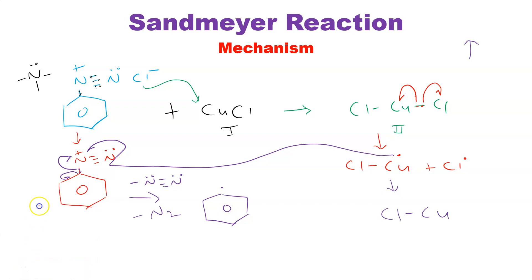Now the octet: nitrogen no longer has a positive charge since N₂ has been removed. You can see the octet is complete — six electrons in three bonds plus two non-bonding electrons equals eight. Earlier, nitrogen's lone pair had been utilized for bond formation with the ring, which is why nitrogen had a positive charge — it was electron deficient. Now it is complete and nitrogen has been removed.